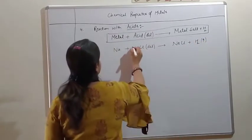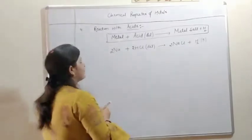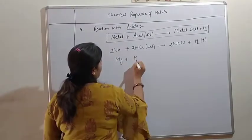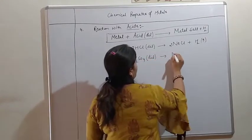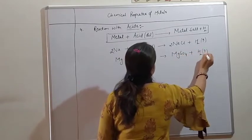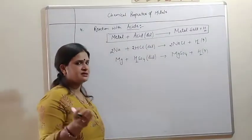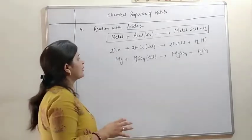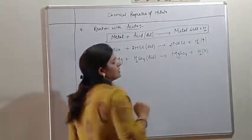Similarly, if we react magnesium with sulfuric acid in dilute form, it will form magnesium sulfate with the release of hydrogen gas. There are various acids like HCl hydrochloric acid, H2SO4 sulfuric acid, HNO3 nitric acid. Generally all the metals react to form the metal salt and hydrogen.